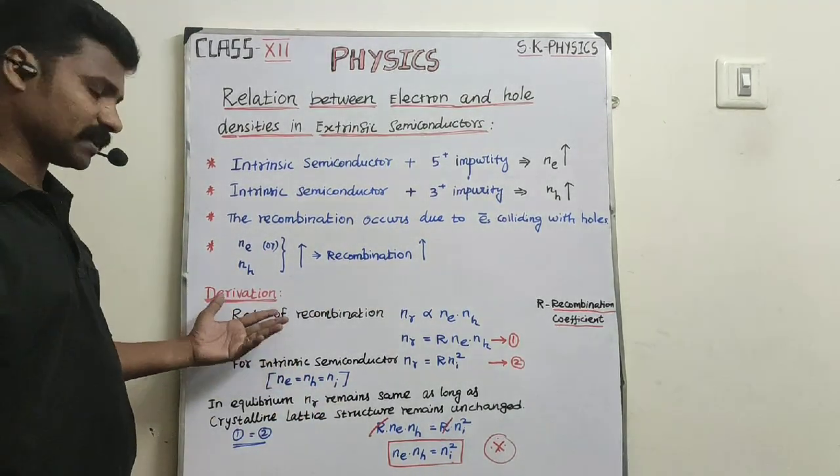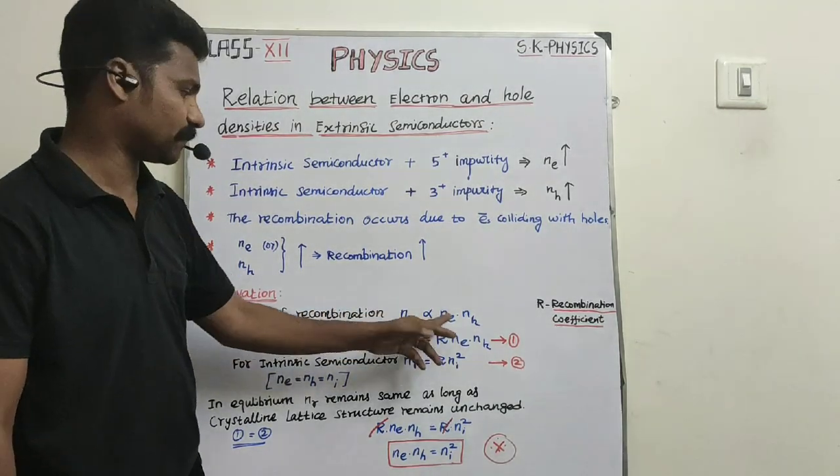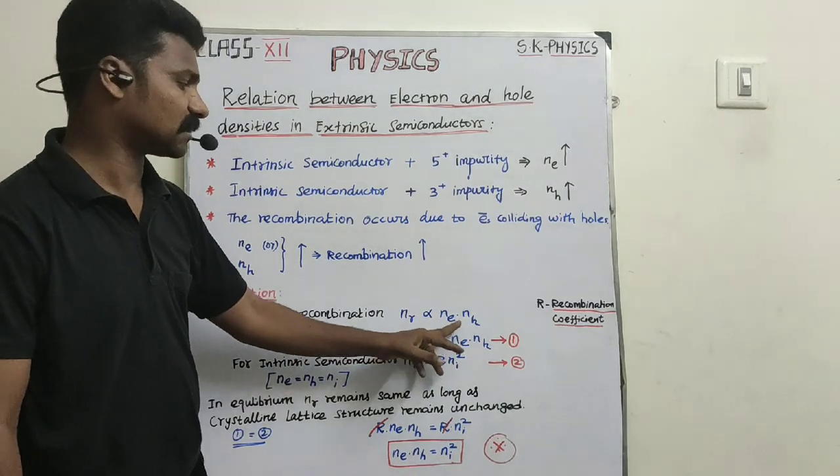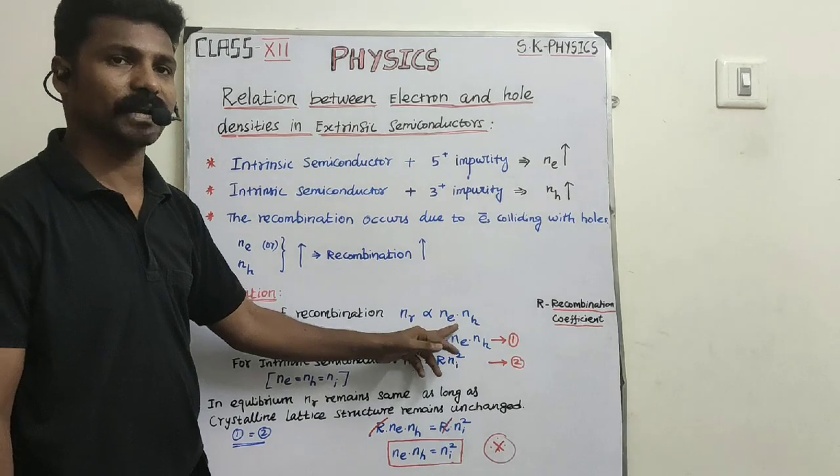So we can say, what is the rate of recombination? The rate of recombination, Nr, depends upon the number of holes concentration and number of electrons concentration. So we can write that Nr is directly proportional to Ne into Nh.